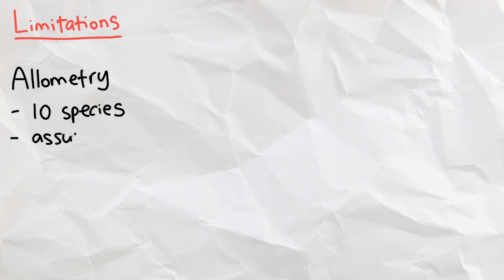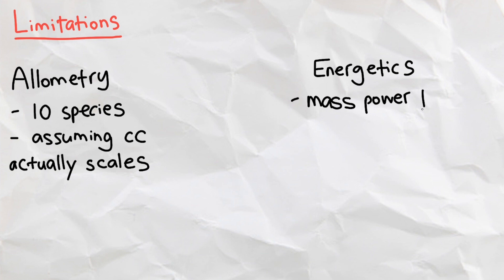There are some limitations to our models, of course. For allometry, we only looked at 10 different species of birds to reach an allometric equation, but more importantly, we are assuming that carrying capacity scales with body weight. For energetics, the muscle mass power was taken from a pigeon, which is less than 1 kg, so it may be a lot more different than a Canada goose.